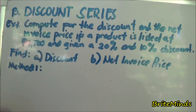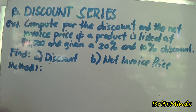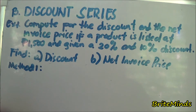I have a problem here. Compute for the discount and the net invoice price if a product is listed at 1,500 pesos and given a 20% and 10% discount. Find: A. the discount, and B. the net invoice price.